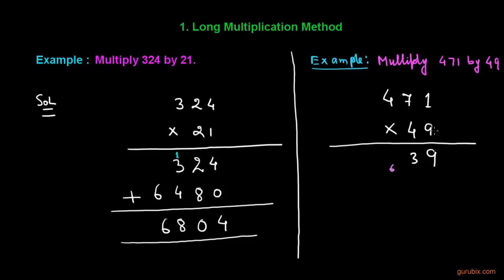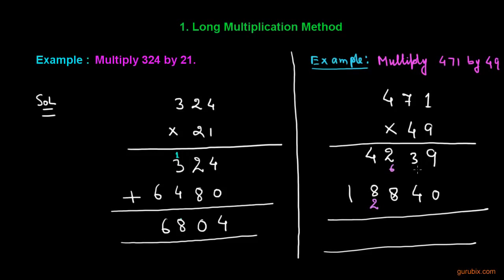4 times 9 is 36; 36 plus 6 is 42. Now we write 0 here and start multiplying 471 by 4: 1 times 4 is 4; 7 times 4 is 28 — we write 8 here and carry 2; 4 times 4 is 16; 16 plus 2 is 18.